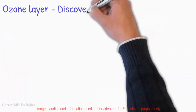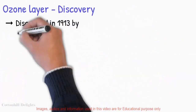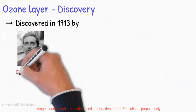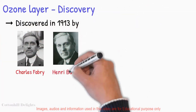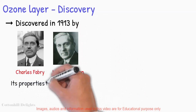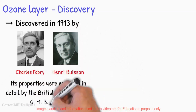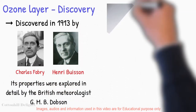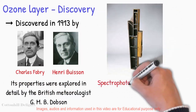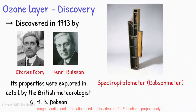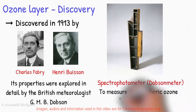Discovery. The ozone layer was discovered in 1913 by the French physicists Charles Fabry and Henri Buisson. But its properties were explored in detail by the British meteorologist G. M. B. Dobson, who developed a simple spectrophotometer, or the Dobson meter, that could be used to measure stratospheric ozone from the ground.